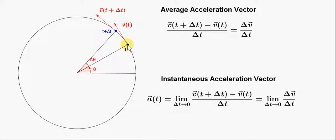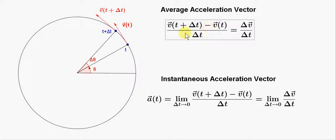Let's suppose that we want the average acceleration of the object as it moves from here to here. To do that, we need to get the change in the velocity of the object. So we need to get the final velocity, which is v of t plus delta t, and subtract the initial velocity vector, v of t. Next, we must divide that difference in the velocity by the time taken, delta t. We can also write what's on top here as delta v, meaning difference in the velocities.